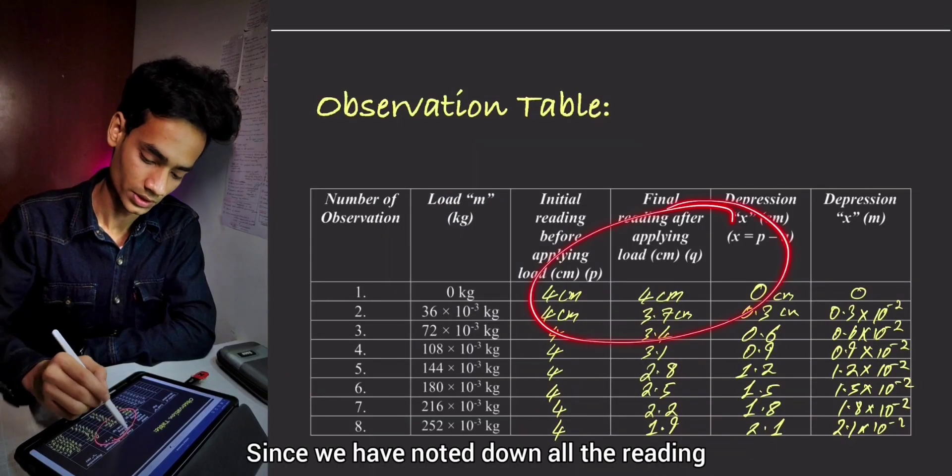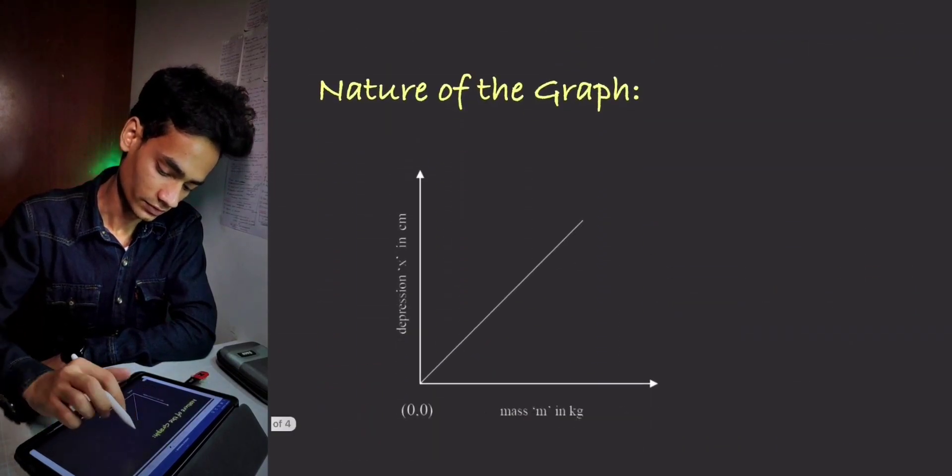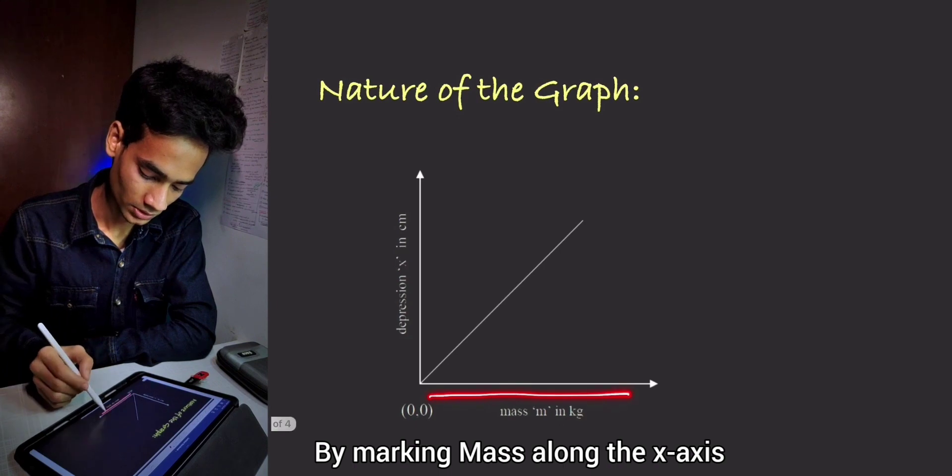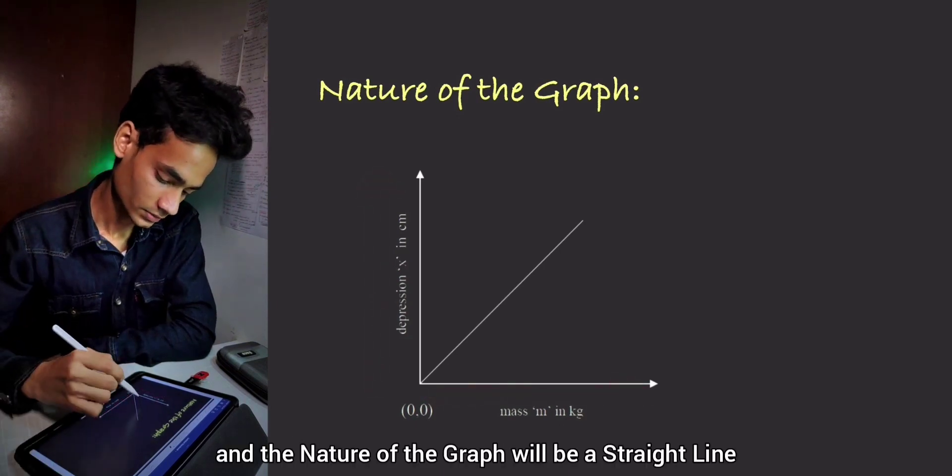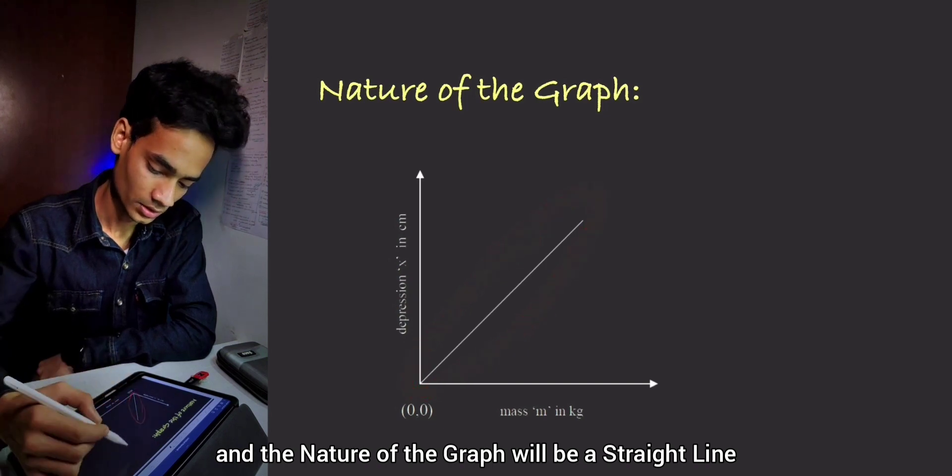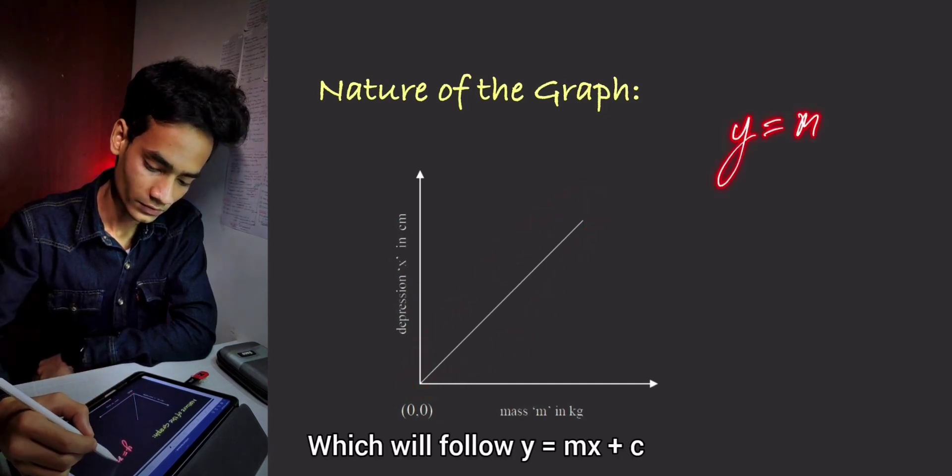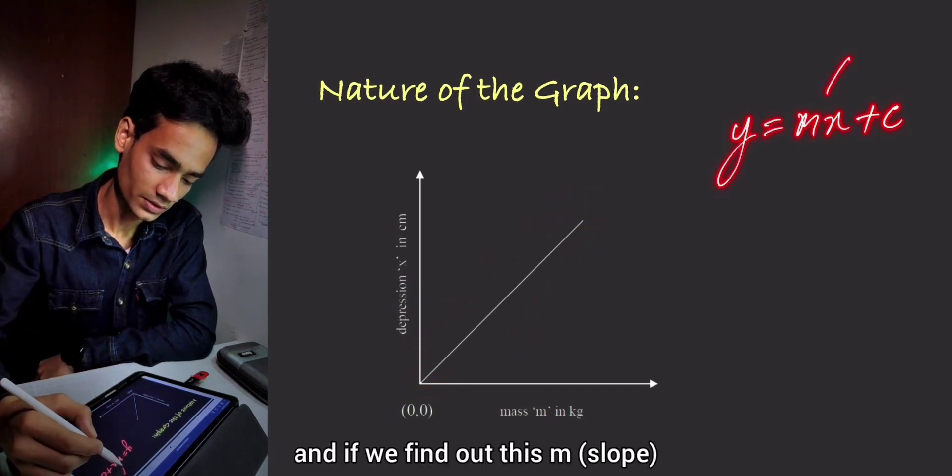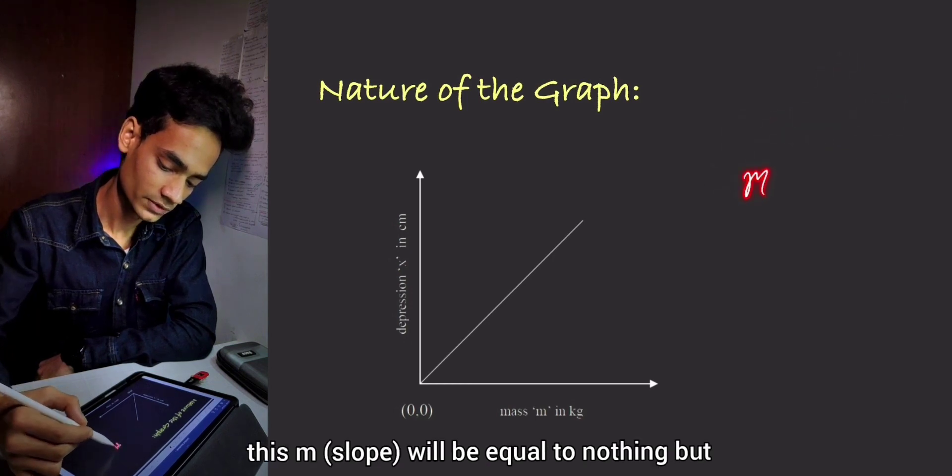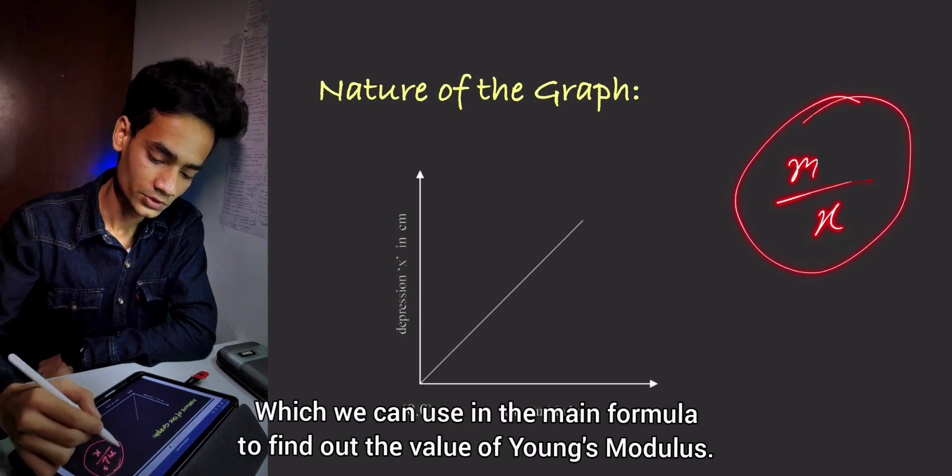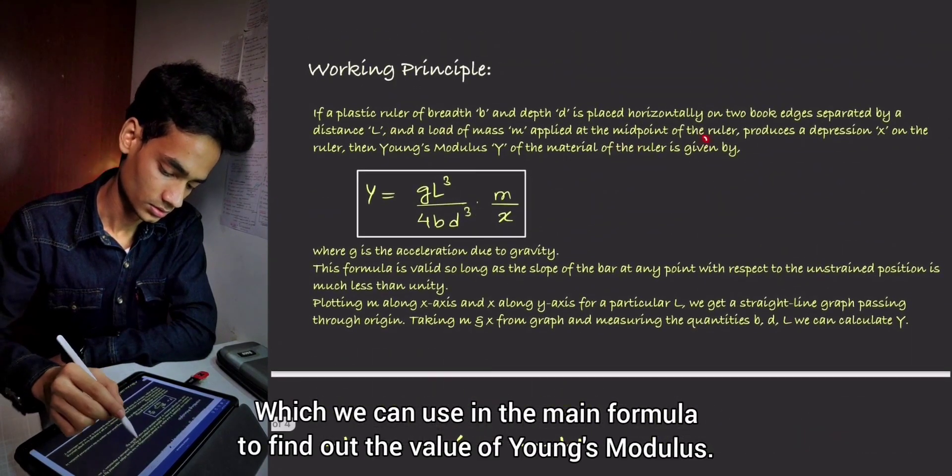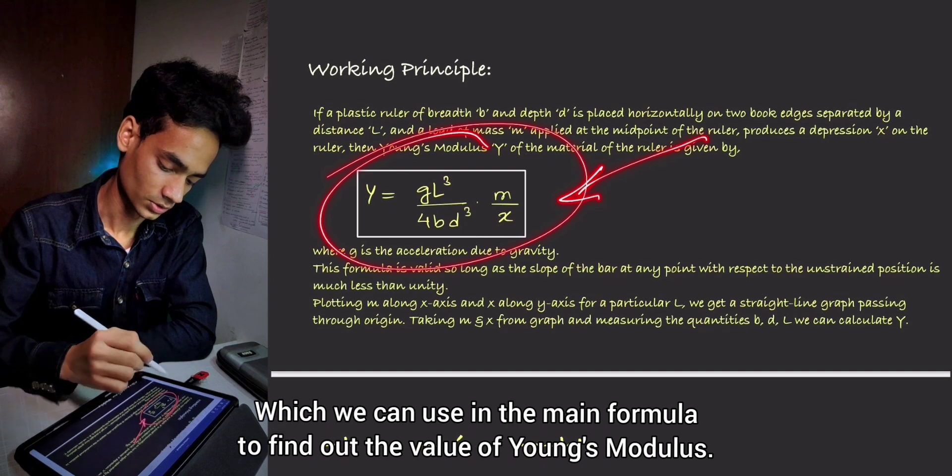Since we have noted down all the readings, now we will plot the graph by marking mass along the X axis and depression along the Y axis, and the nature of the graph will be a straight line which will follow Y equals MX plus C. And if we find out this M, this M will be equal to nothing but M by X, which we can use in the main formula to find out the value of Young's modulus.